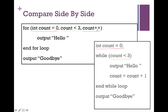Both loops must also have a way to alter the loop control variable. Inside the for loop, it's right at the top — each time through, count is increased by one. Inside the while loop, the alteration is in the loop body — after outputting hello, count is increased before looping back to evaluate. So both loops have all three pieces: declare and initialize the loop control variable, the condition to check, and a way to alter the loop control variable.